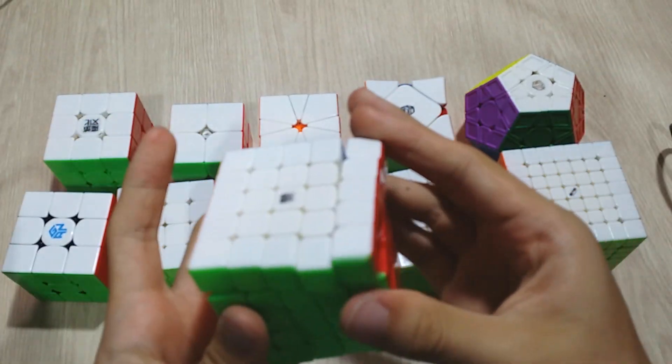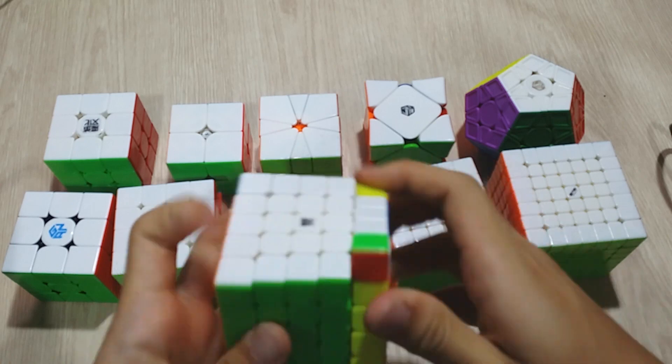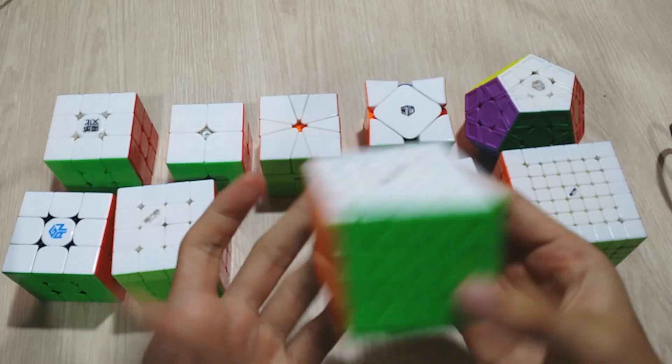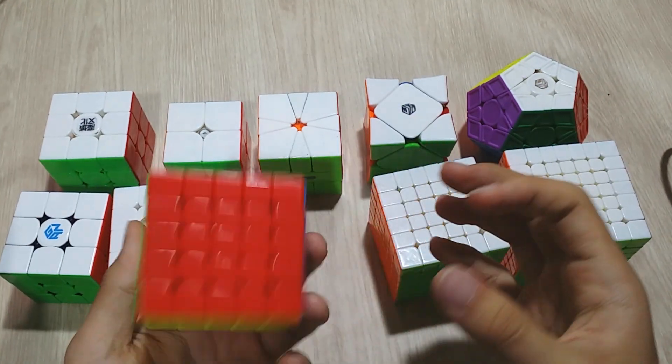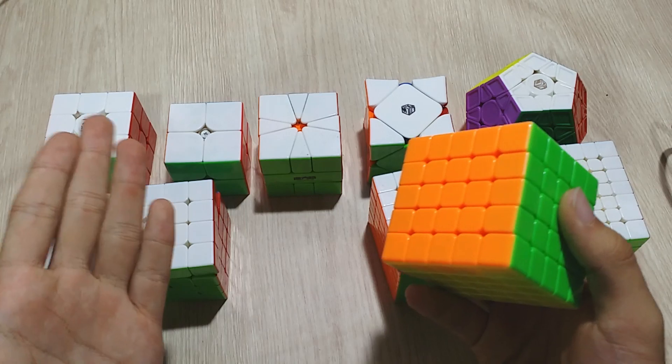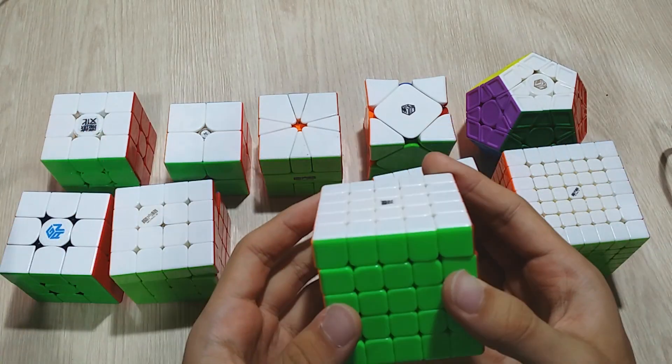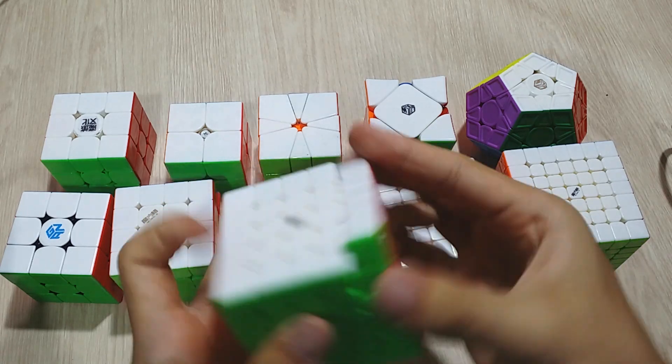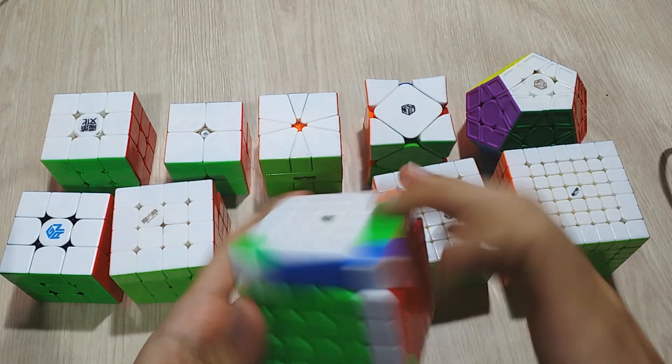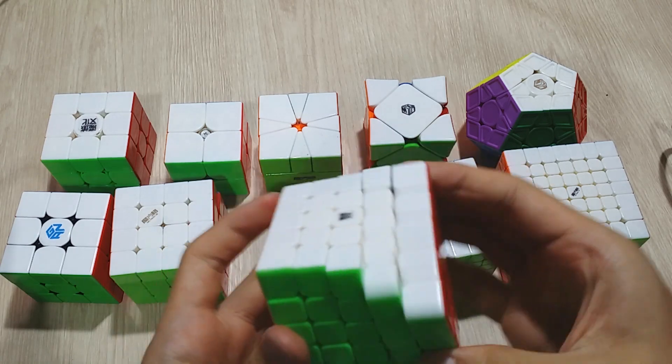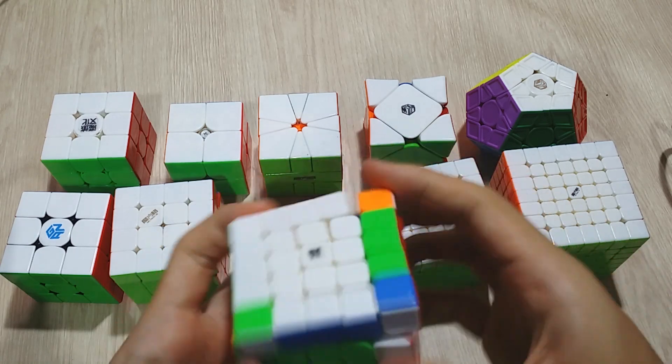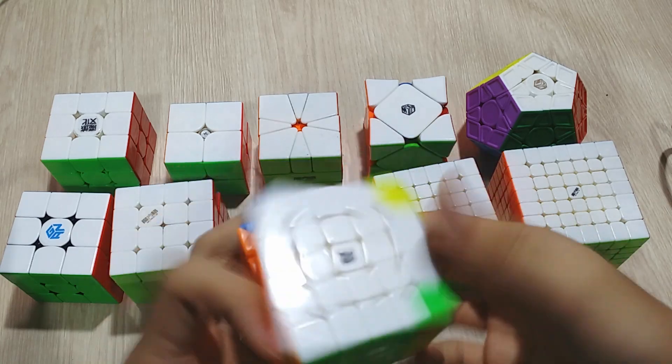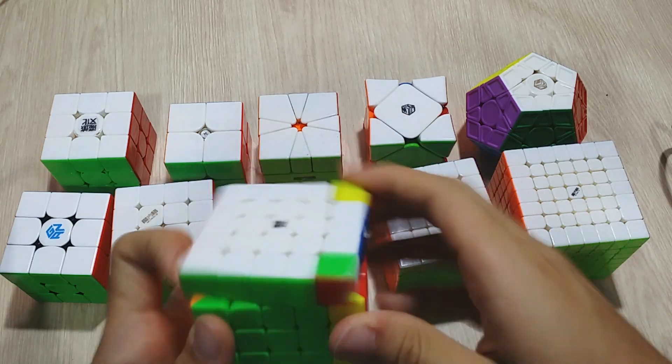For 5x5, I use the MoYu Aouchong GTSM. Same story here. I got this cube, and on the first solve I broke my PB with it, which is amazing. And the second solve I broke my PB again, then the third solve I broke my PB again—three times in a row. This cube is just amazing. Though it's not as fast as my Yushin, which is my old main, it's very nice. It does not lock up like the Yushin, and the corner cuts better. Everything's better about this cube.